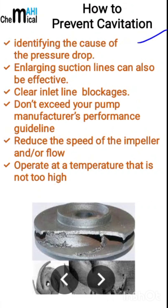So you have to check for all these things — what are basically the root causes — and try to decrease the number of bends and valves as much as you can. The second point is enlarging the suction line size. Then clear any blockages, like strainer choking. You also should not exceed the pump performance as given by the supplier in the characteristic curves.